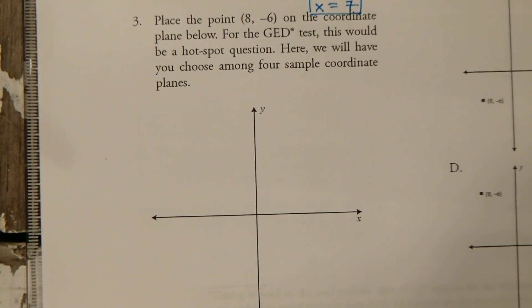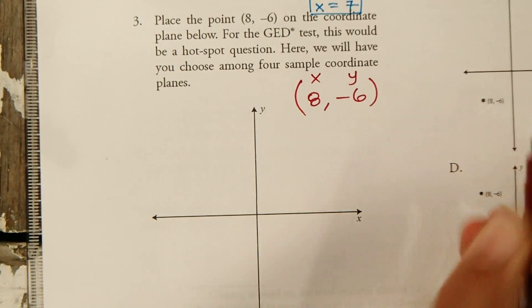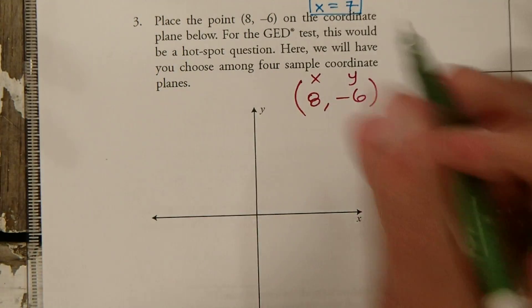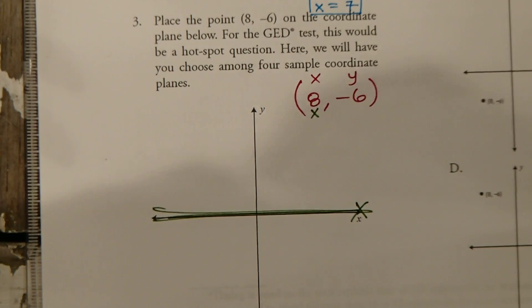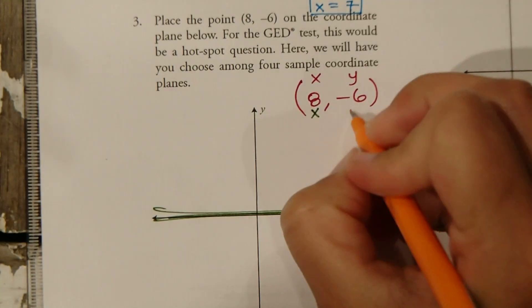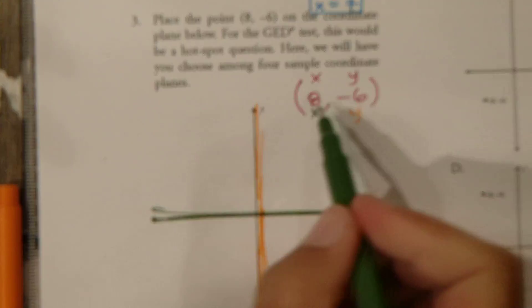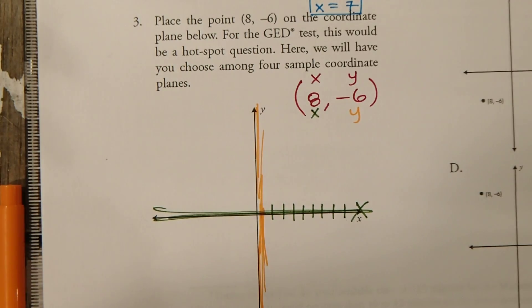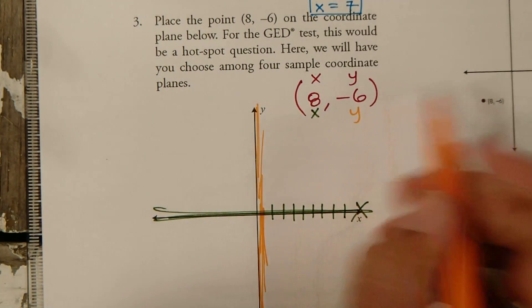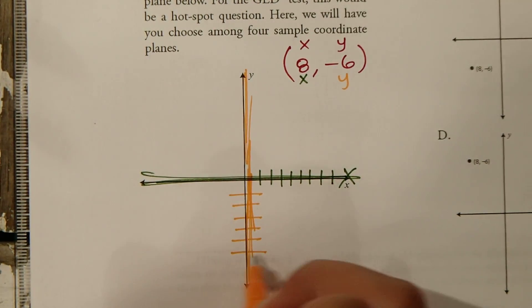All right. Number 3. Place the point 8, negative 6 on the coordinate plane. 8, negative 6. So we know this is the X. This is the Y. I'm going to color code this. Call this the X. This is the X axis here. And this is the Y. Call this one orange. Okay. So on the X axis, we're going over positive 8. This is positive 8 here. So 1, 2, 3, 4, 5, 6, 7, 8. And then we're going down 6 on the Y axis. This is negative 6. So we're going to go down. 1, 2, 3, 4, 5, 6. So this is negative 6.